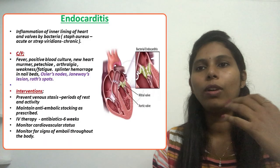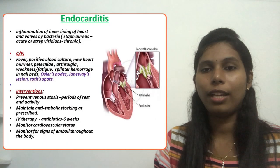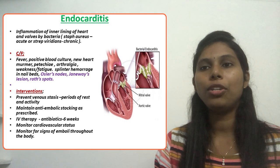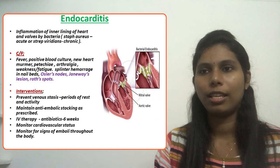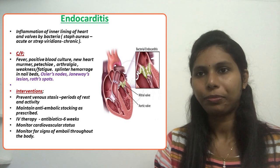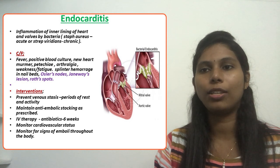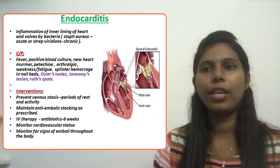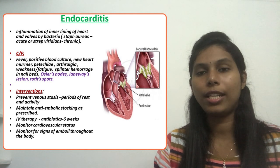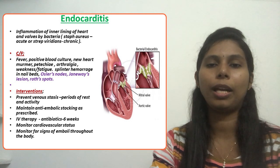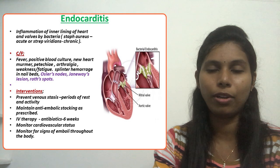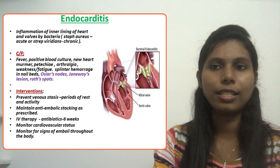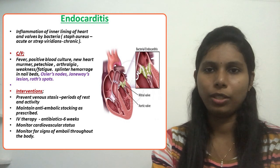For interventions provided to a client diagnosed with endocarditis: prevent venous stasis, plan periods of rest and activity, maintain anti-emboli stockings as prescribed, and administer IV antibiotic therapy for six weeks. Monitor cardiovascular status throughout antibiotic therapy, instruct the client about side effects of the antibiotics, and monitor for signs of emboli throughout the body.